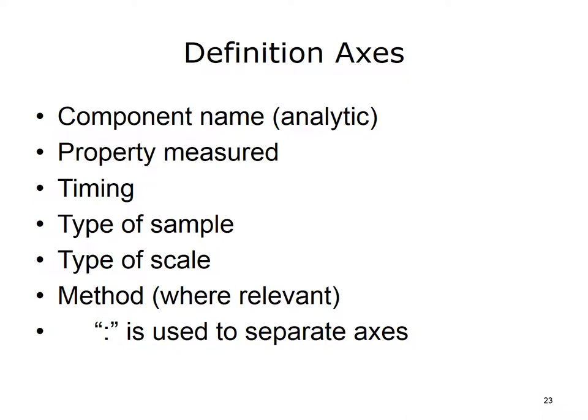These axes were defined by asking: What are the minimum characteristics we need to know to uniquely identify lab tests? The definition axes are: 1. Component — What is measured, evaluated, or observed? (e.g., Potassium, hemoglobin, hepatitis C antigen); 2. Property measured — Characteristics of what is measured (e.g., length, mass, volume, timestamp, enzyme activity); 3. Timing — Interval of time over which the observation or measurement was made (e.g., point in time [PT], or observation integrated over 24-hour urine).